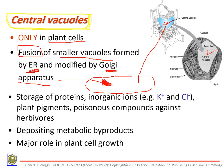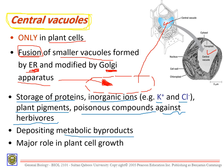What is the importance of the central vacuole? It stores proteins, inorganic ions like potassium and calcium, pigments, and poisonous compounds — to protect the plant against herbivores as a defense mechanism. It also deposits metabolic byproducts and plays a major role in plant cell growth. These are the functions of the central vacuole.